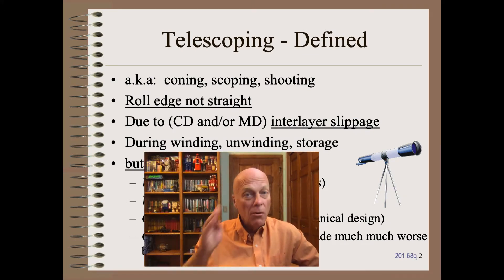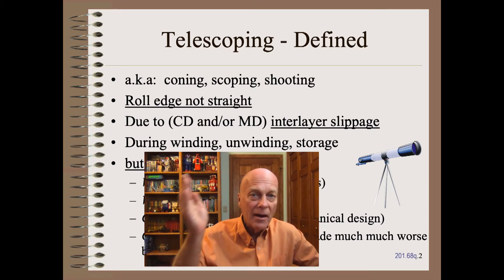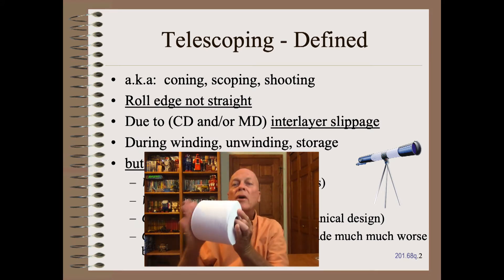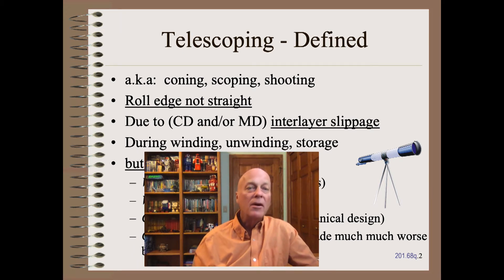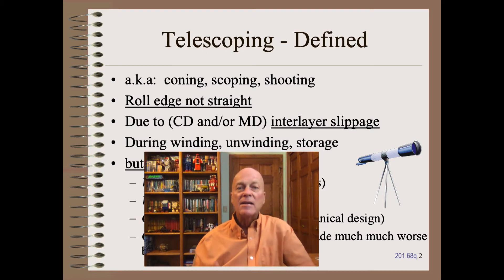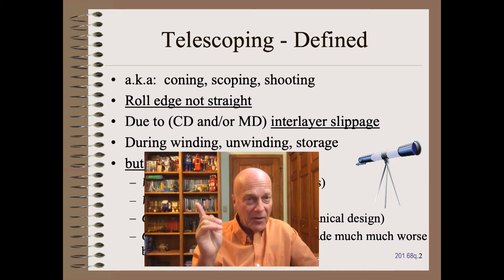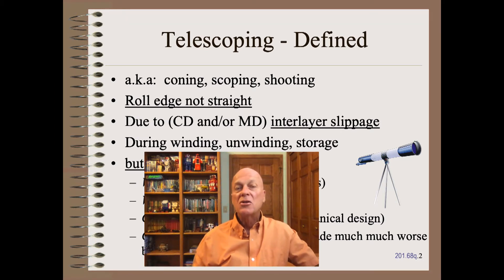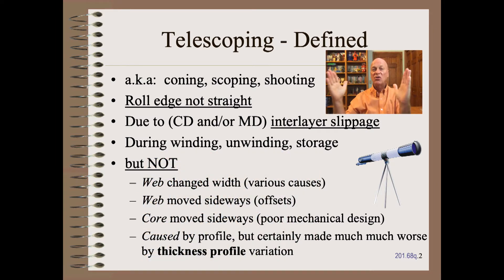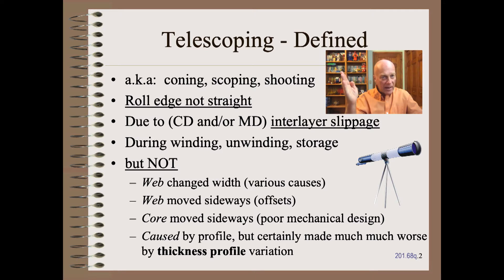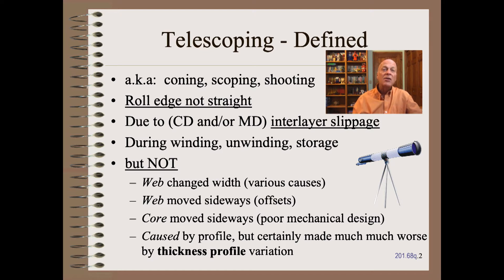Words do matter, so before we start, we need to be careful about what we are talking about. The roll edge is not straight during winding, unwinding, storage, or transport. However, it is not straight due to a specific mechanism — inner layer slippage — versus some other mechanism, such as the web changed width, or the web moved sideways, or the core moved sideways. We are also not talking about rough roll edges covered recently in Web 201.68. Note that while gauge profile variation can make the problem worse, telescopes are not caused by gauge variation.